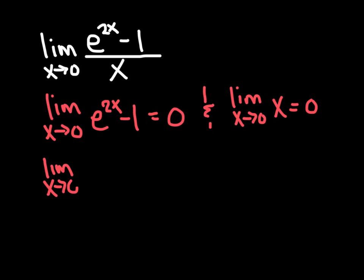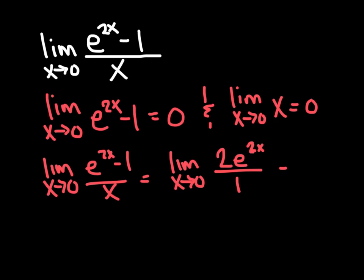And the limit as x approaches zero of e to the 2x minus one over x is equivalent to the limit as x approaches zero for 2e to the 2x. So I derived my numerator. Now I'm going to derive my denominator, substitute my zero now, and my answer is one, and I'm all done. It's really, really quick, smooth, and just a wonderful rule.